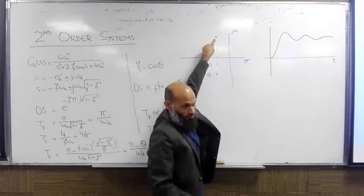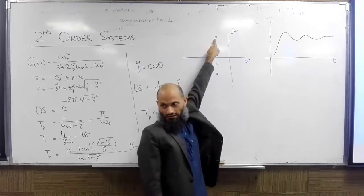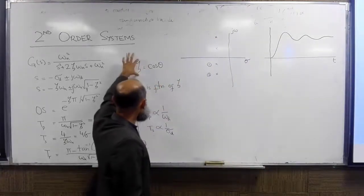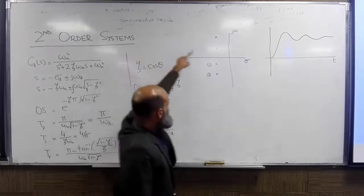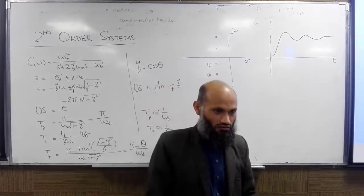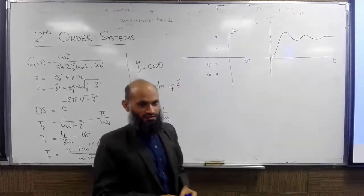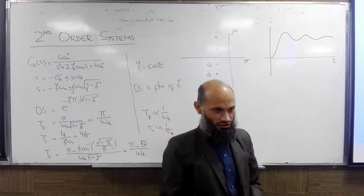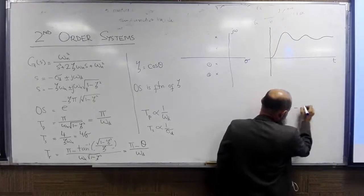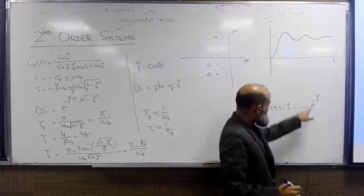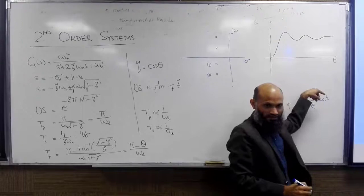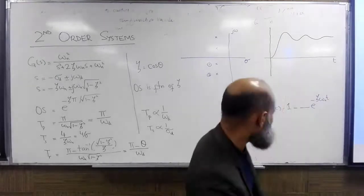System two has more overshoot, because theta is larger for system two, and larger theta means smaller zeta. Smaller zeta means more overshoot. With less damping there will be more oscillations. You can also see this from the expression for c(t): smaller zeta means the decaying exponential term decays slower, producing more overshoots.